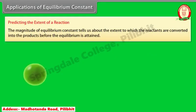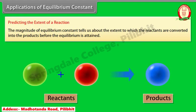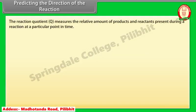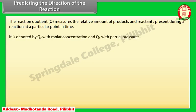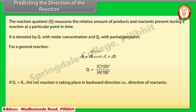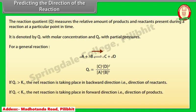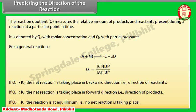Predicting the extent of a reaction: the magnitude of the equilibrium constant tells us about the extent to which reactants are converted into products before equilibrium is attained. Predicting the direction of the reaction: the reaction quotient Q measures the relative amount of products and reactants present during a reaction at a particular point in time. It is denoted by Qc with molar concentration and Qp with partial pressures. For a general reaction: if Qc > Kc, the net reaction proceeds in the backward direction (toward reactants); if Qc < Kc, the net reaction proceeds in the forward direction (toward products); if Qc = Kc, the reaction is at equilibrium and no net reaction is taking place.